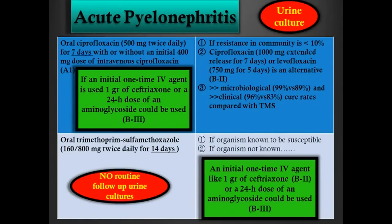Levofloxacin is superior to Bactrim for empiric treatment of pyelonephritis. Bactrim for pyelonephritis can only be used if the organism is known to be susceptible — and in this case you will have a urine culture. The dose is two weeks instead of seven days. If the organism is not known and you want to start Bactrim, again give an initial dose of ceftriaxone, tobramycin, or gentamicin in the emergency room, then switch to oral and await cultures. Remember: there is no indication for routine follow-up urine culture or proof of cure for pyelonephritis, except in pregnant women.